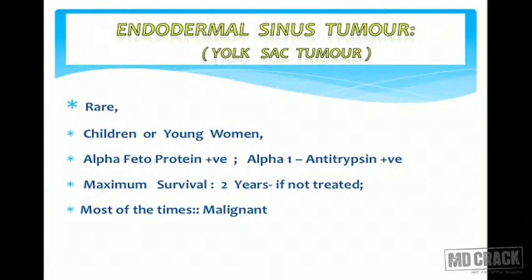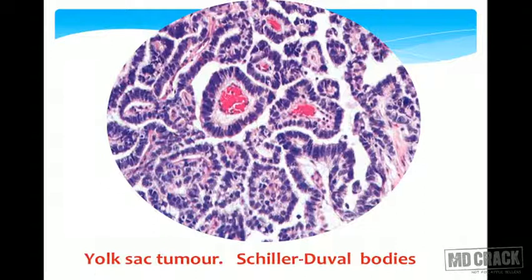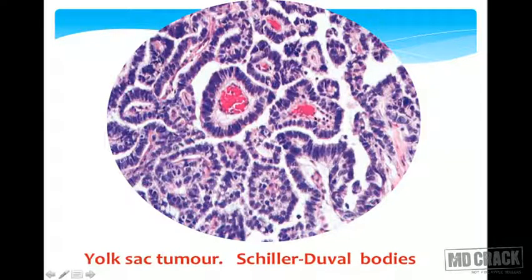Yolk sac tumor, also known as endodermal sinus tumor, is a rare tumor seen in young patients. Tumor markers: alpha-fetoprotein and alpha-1 antitrypsin are positive. Maximum survival without treatment is around two years, with most patients showing metastasis at diagnosis. The hallmark microscopic finding is the Schiller-Duval body — a glomeruloid structure with a central capillary surrounded by two layers of cells.